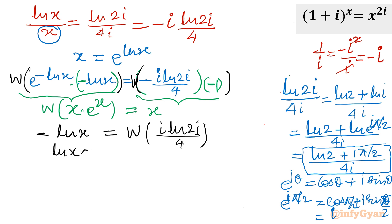Minus times minus becomes plus Lambert W. Now ln x I will write minus Lambert W function of i ln 2i divided by 4. x will be equal to e raised to the power minus Lambert W function i ln 2i divided by 4.